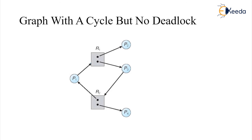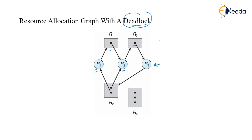Now this graph contains a cycle: P1 is looking for resource R1 which is allocated to P2 and P3, and P3 is requesting R2 whose one instance is allocated to P4. Yes, there is a cycle — but P2 and P4 are pendant vertices. They will ultimately finish their tasks using R1 and R2 and then release them. Once P4 releases, the resource can be allocated to P3, P3 will finish, and P2 will also eventually finish. So this graph has a cycle but no deadlock, while in the previous situation the cycle did lead to deadlock.